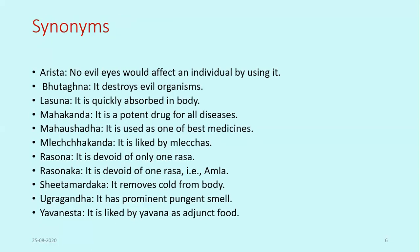Important synonyms of Rasuna: It is known as Arista — meaning no evil eyes would affect an individual using Lashuna. It is known as Bhutagna — meaning it destroys evil organisms. Lashuna means it is quickly absorbed in the body. Mahakanda means it is a very potent drug for all types of diseases. Mahosadha means it is one of the best medicines to treat various diseases. Mlechakanda means it is liked or used by the Mlecha people.